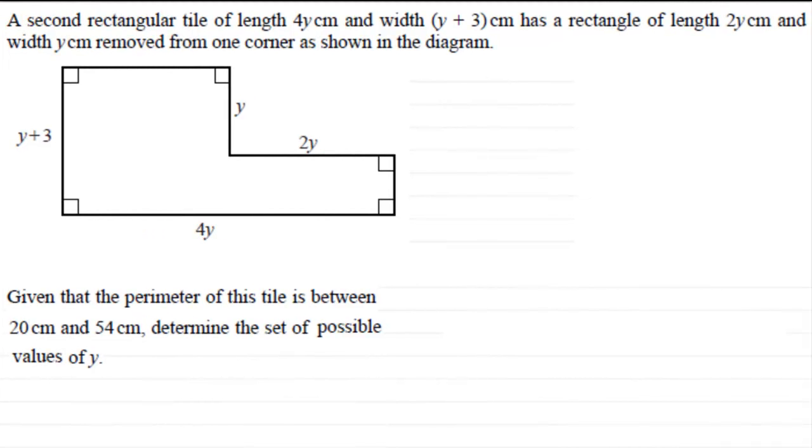Hi. We've got another example here on solving inequalities. In this one, we've got a second rectangular tile of length 4y and width (y + 3) cm that has a rectangle of length 2y and width y cm removed from one corner as shown in this diagram.